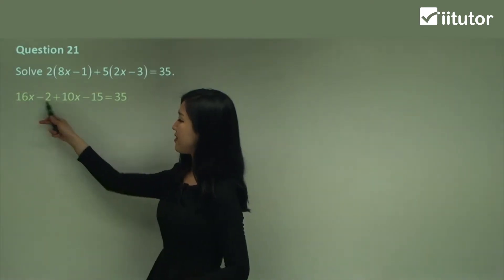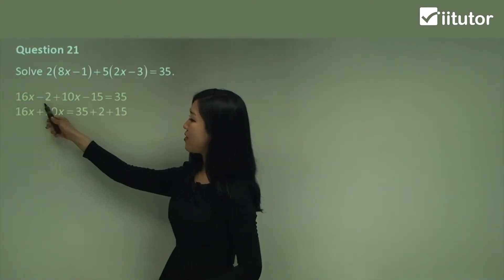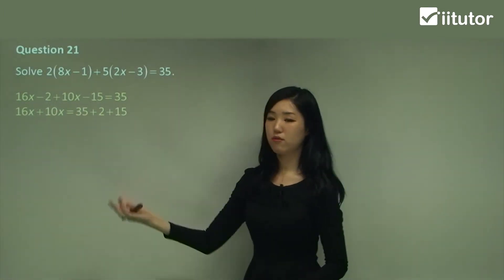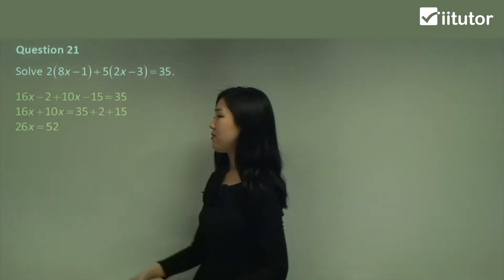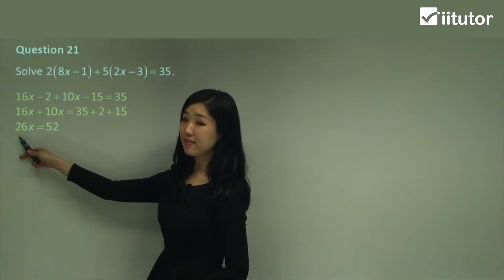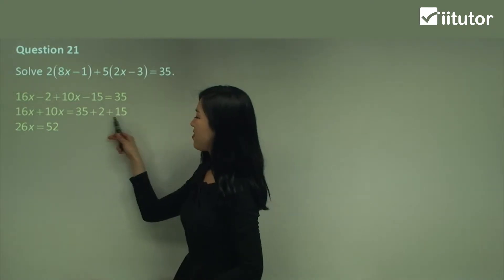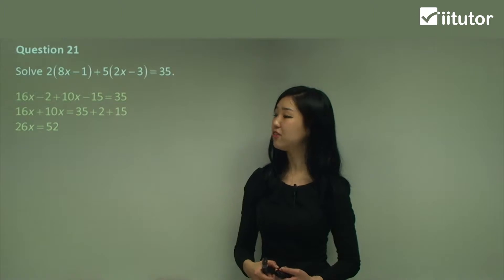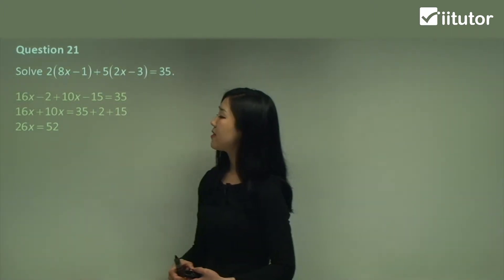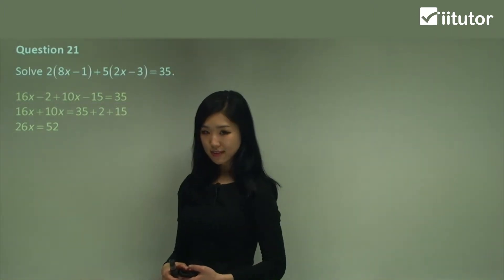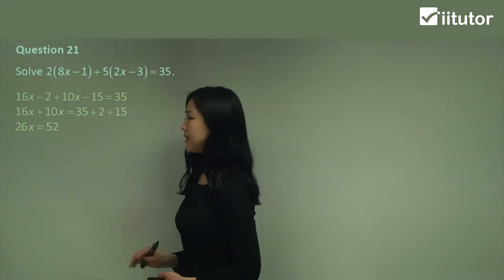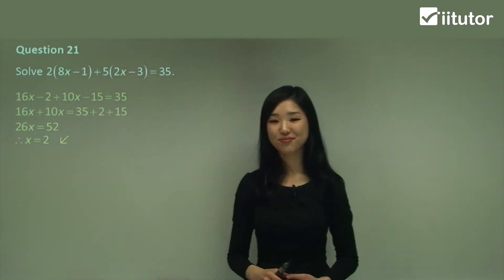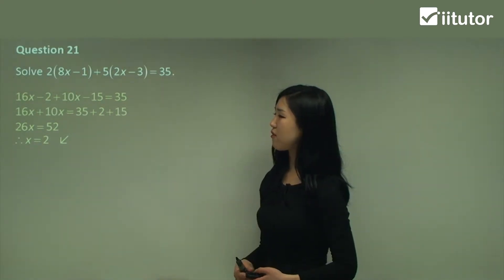Gather your like terms. I'm gonna leave my 16x and 10x on my left and the negative 2, so make it positive 2. The negative 15 make it positive 15. And simplify it. That side 16 plus 10 is 26, so 26x and add these up guys you should get 52. Make sure you can do your own calculations. Now 26x equals to 52. What do we do to the 26? Divide it. So x will be just 2 because 52 divided by 26 is 2. I hope you're getting the hang of this now. It's very repetitive.